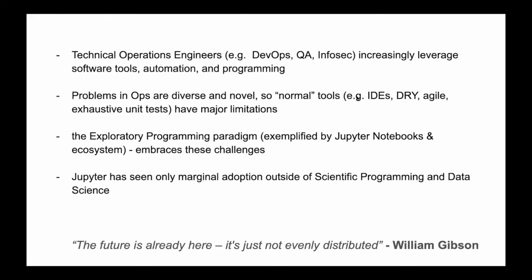The general assumptions of this talk: people in technical operations — DevOps, QA automation, InfoSec, etc. — their day-to-day has been transformed by software automation and programming. When he started in the software industry, they had systems administrators. Nowadays you call yourself a DevOps engineer, pick up some Python programming skills, and charge your employers three times as much — and he's only being somewhat flippant.